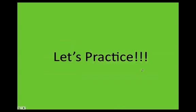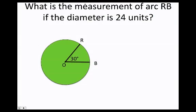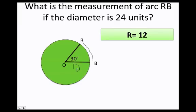Let's go ahead and practice. Let's say they ask me, what is the measurement of arc RB, so this guy here, if the diameter is 24 units? Well first I remember that the diameter is 2 times the radius, therefore the radius has to be 12. So OB has to be 12, and OR has to be 12.